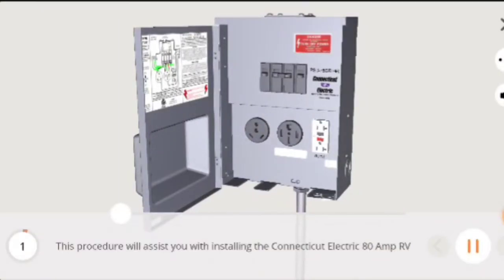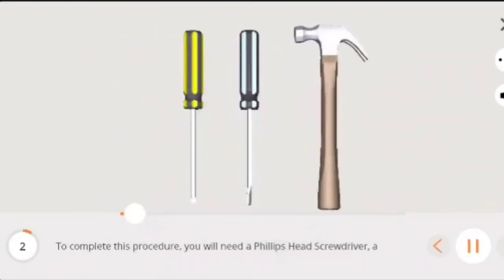This procedure will assist you with installing the Connecticut Electric 80 Amp RV Power Outlet. To complete this procedure, you will need a Phillips head screwdriver, a flathead screwdriver, and a hammer.